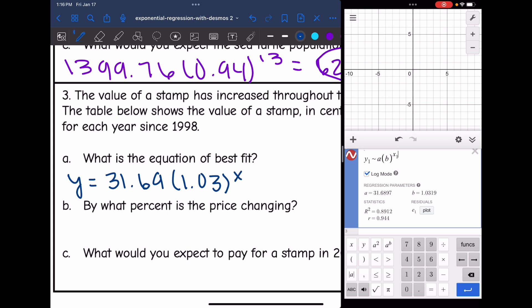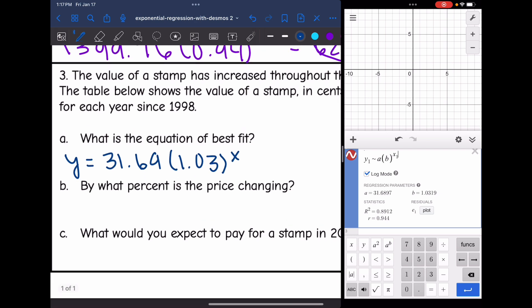And the next question says, by what percent is the price changing? So the B value tells me how much my price is changing by. I know that it's going up because 1.03 is greater than 1. To figure out how much it's going up by, I'll subtract 1 from that. And I get 0.03 or 3%.